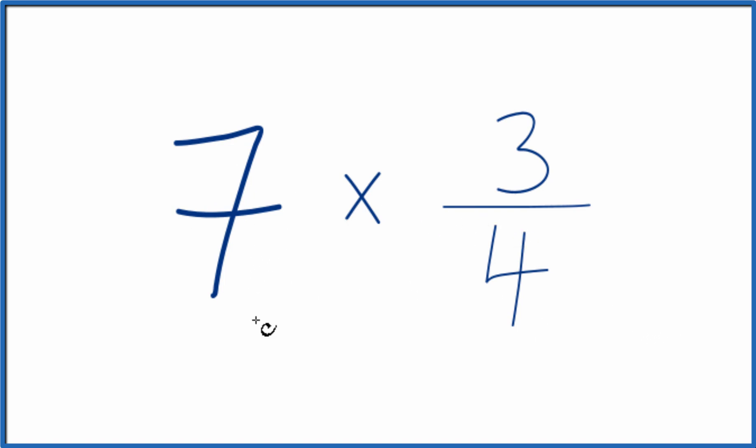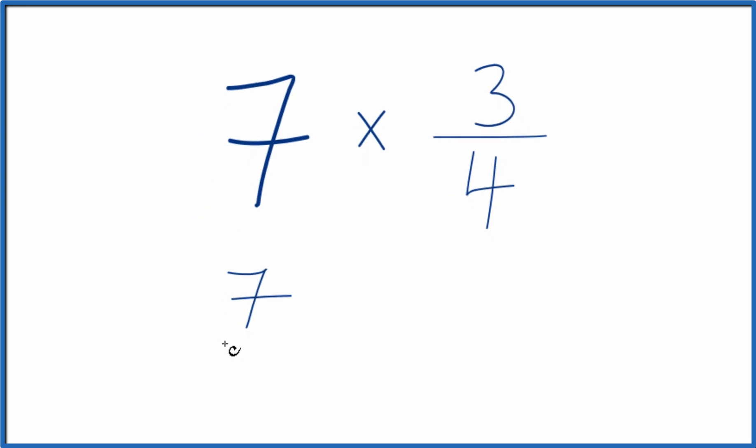Maybe an easier way to do this is to consider 7 as 7 over 1. That way we have a fraction. It's still 7, we're just dividing by 1.